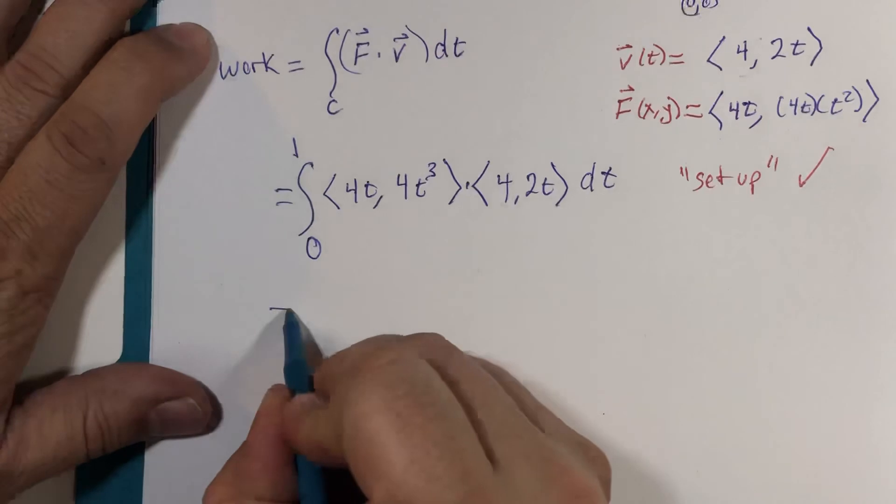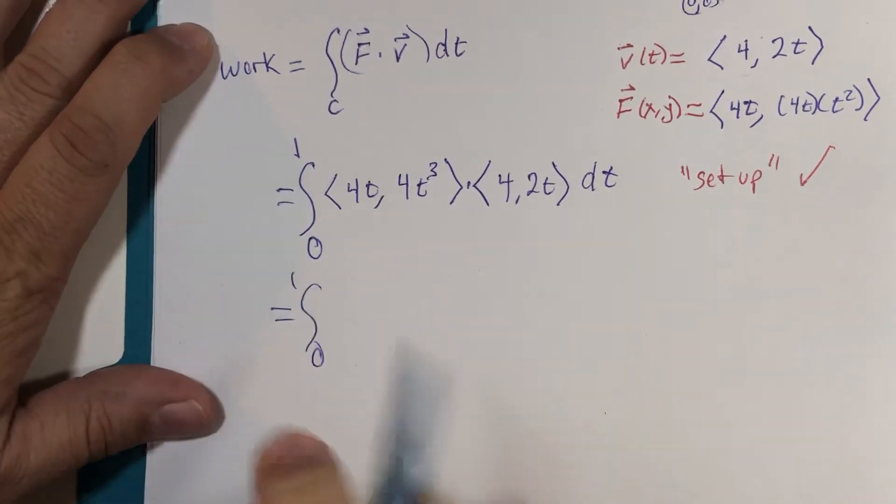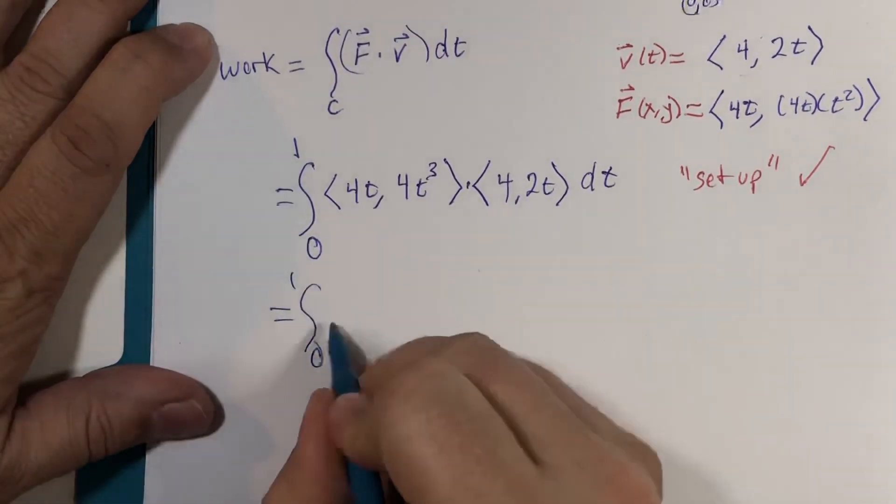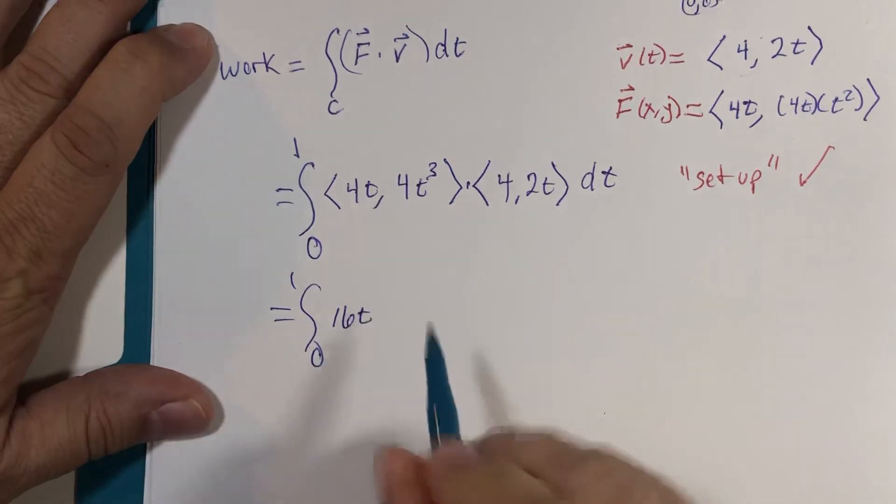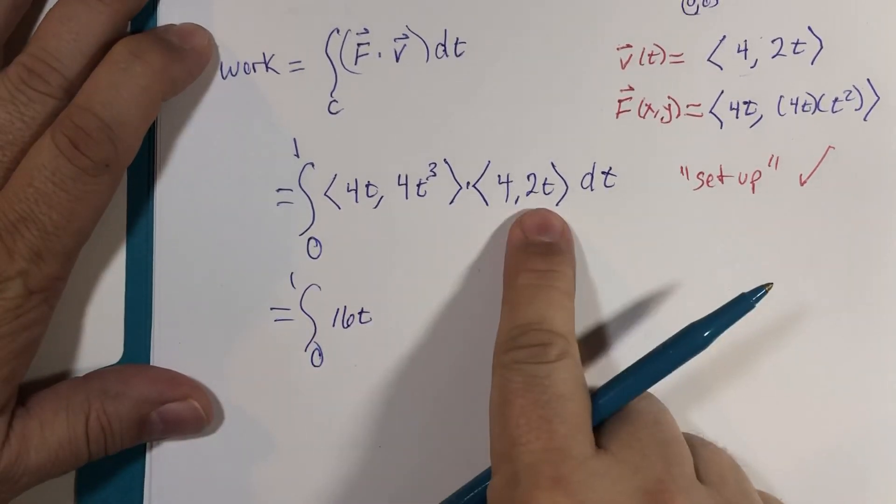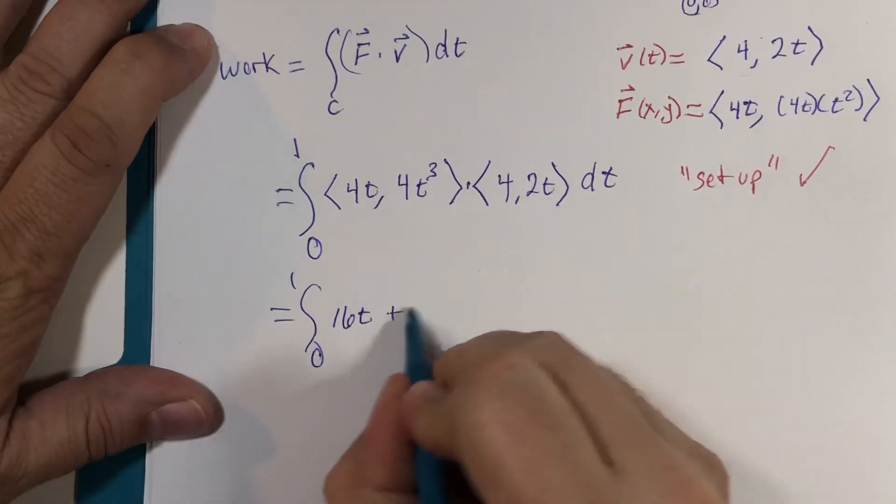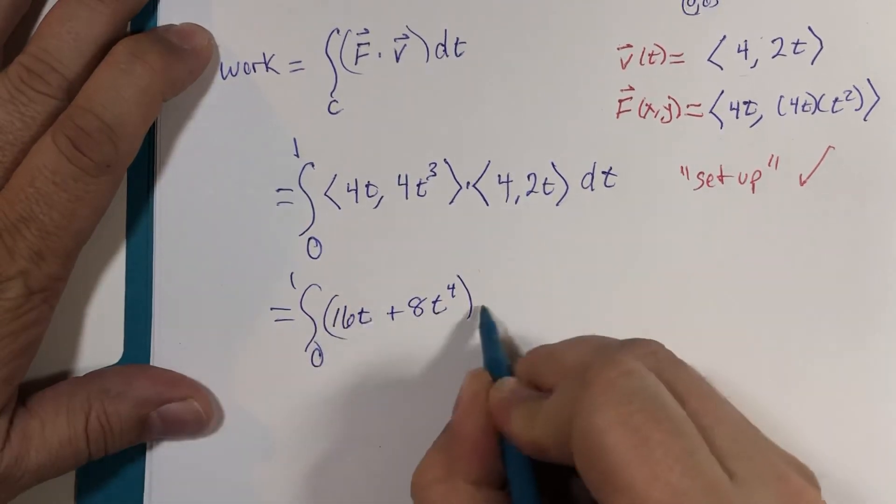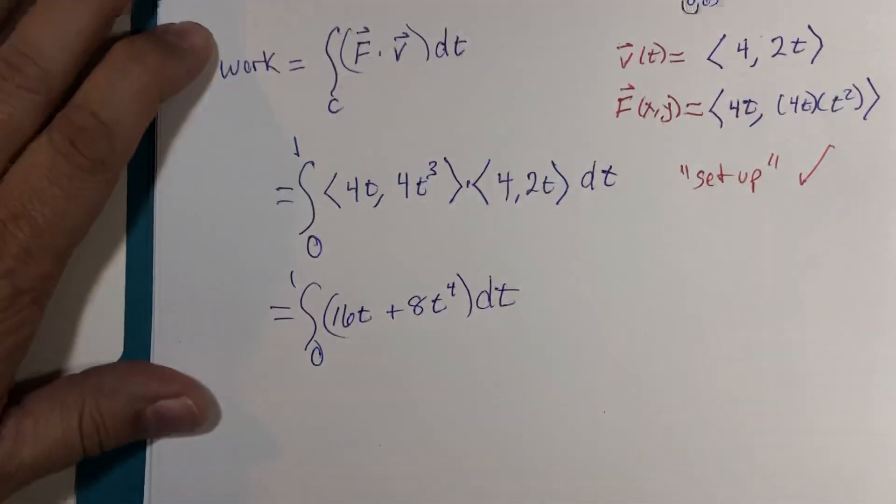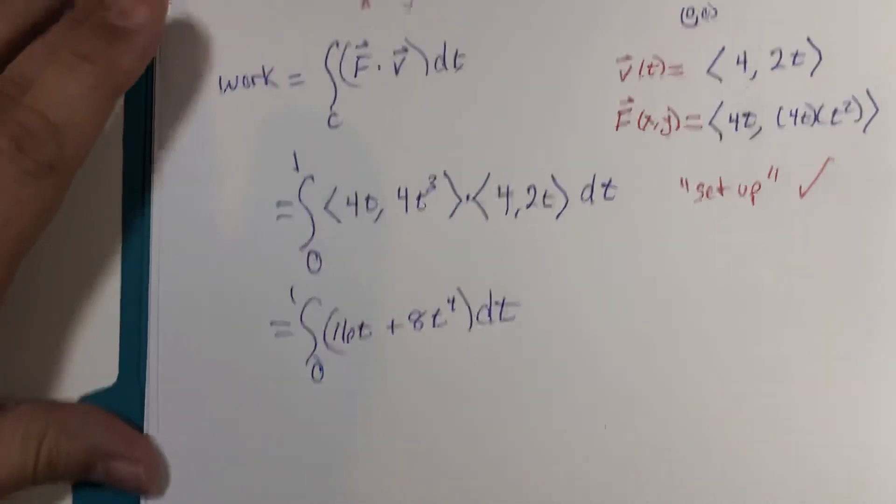Okay, dot product: 4t times 4 is 16t, 4t³ times 2t is 8t⁴, and we evaluate that from 0 to 1.